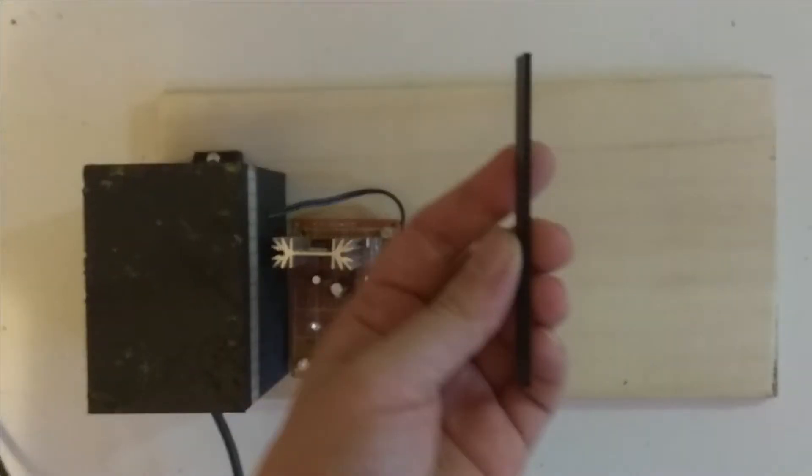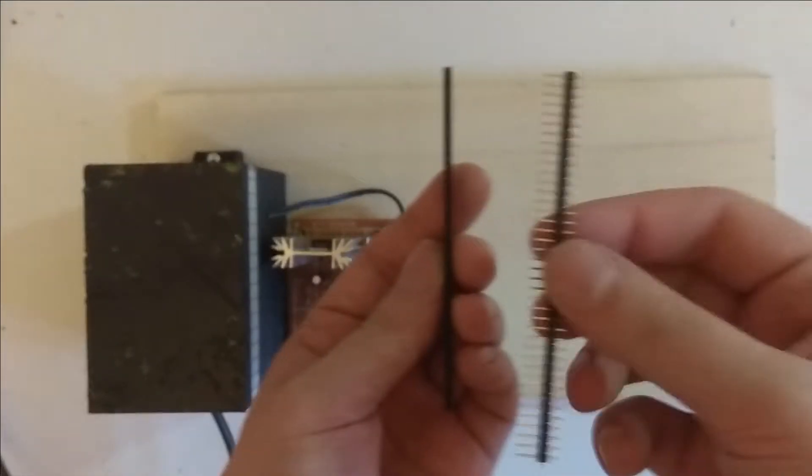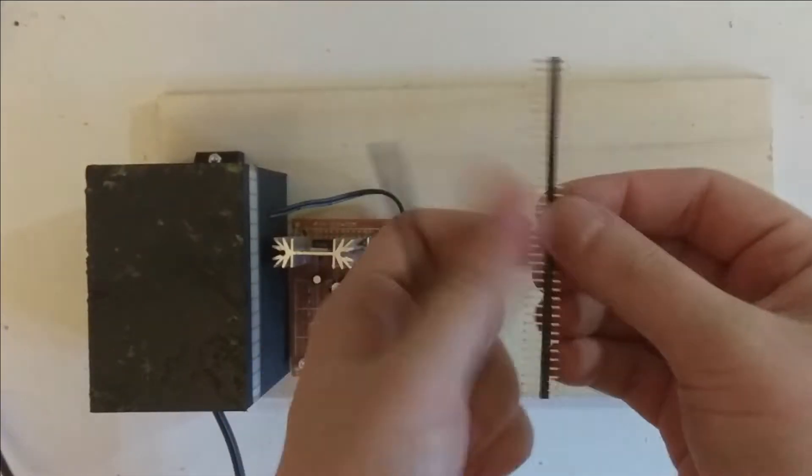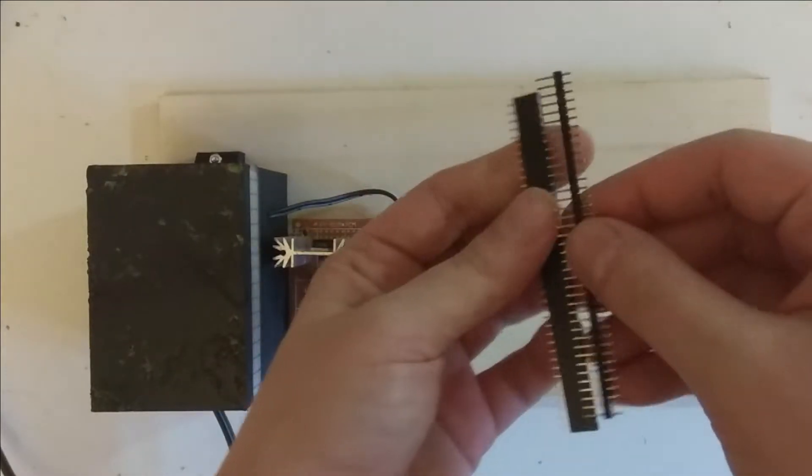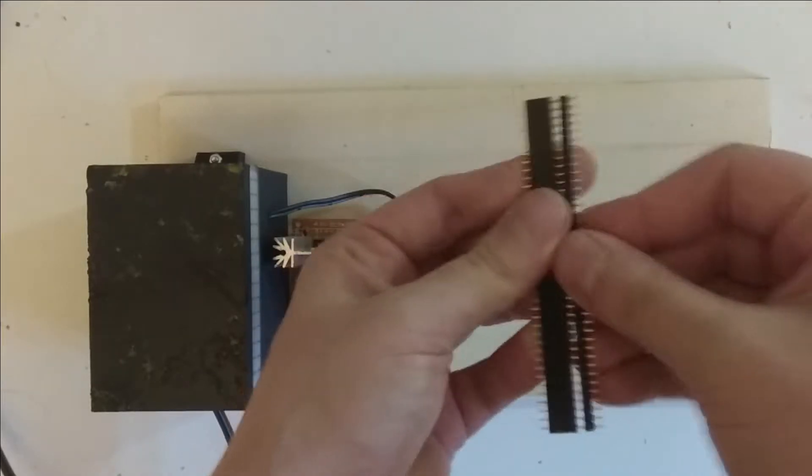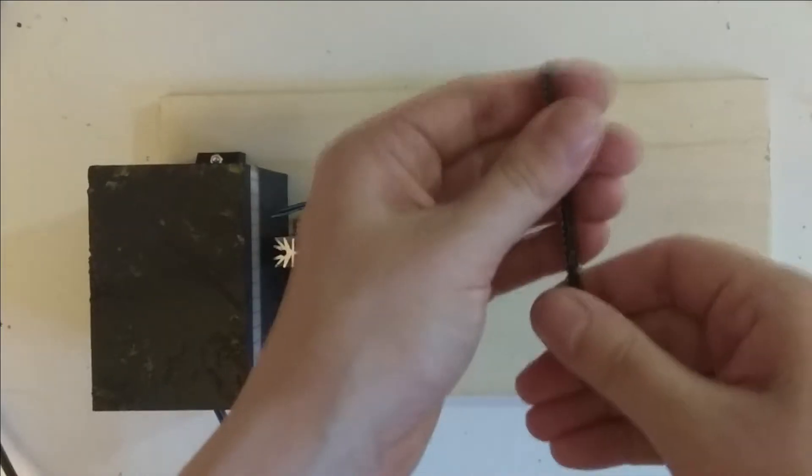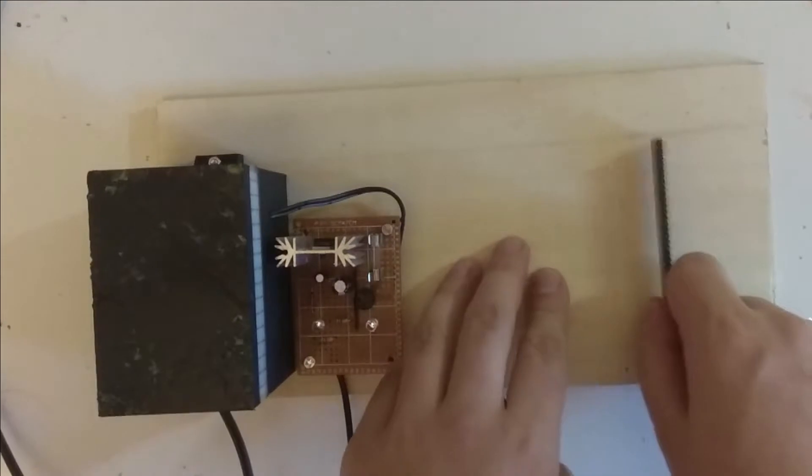And then you can have your cards that would have not a straight header like this but an angled one. It would sit on here with this angled header and then you could just plug them in like this. And you'd have your peripheral card sitting down here.